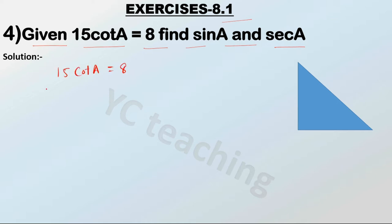We can write cot A is equal to 8 by 15. Our angle is A. Let's suppose this is our triangle with vertices A, B, and C, where C is the right angle.